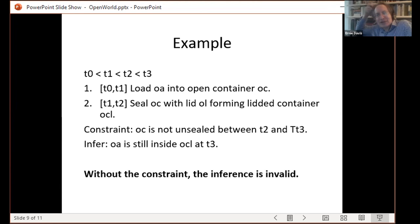And open world container has almost as much to do with what you're not allowed to infer as what you can infer. So it's very important that if we leave out the constraint that it's not unsealed, that we are unable to make the inference that it's still inside the container. We do not make a closed world assumption over actions. We don't assume that just because we didn't specify anything happened between T2 and T3, that nothing did happen. And so without the constraint, it would be possible that OC was unsealed and OA was taken out or dumped or C was dumped. And therefore, without the constraint, the inference is invalid.